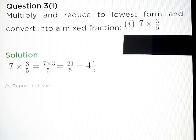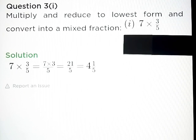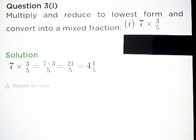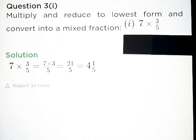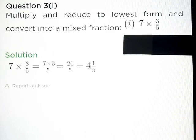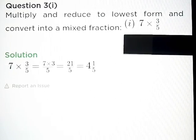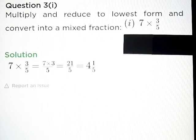First: 7 into 3 upon 5. Answer: 4 and 1 upon 5. That is equal to 21 upon 5.